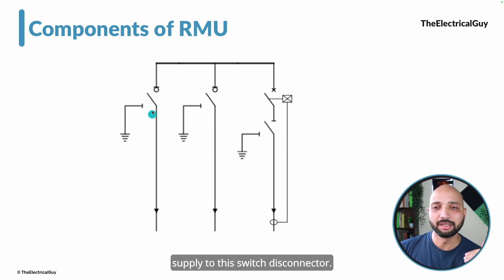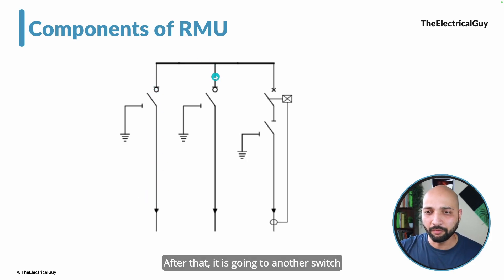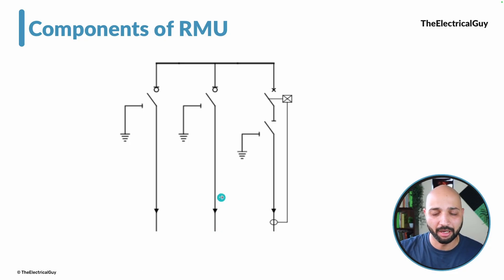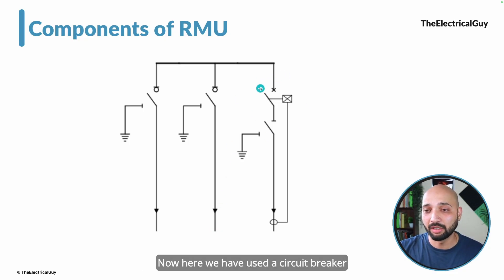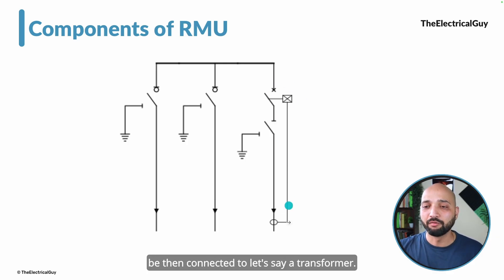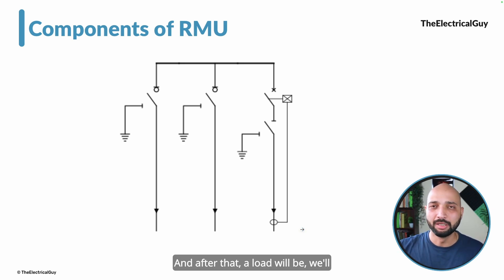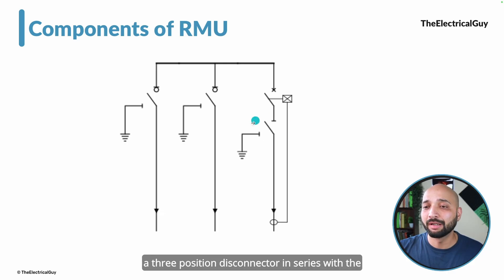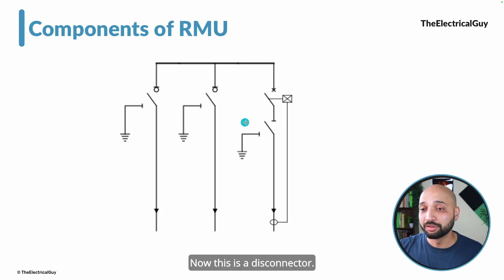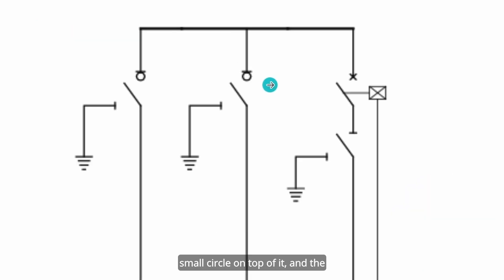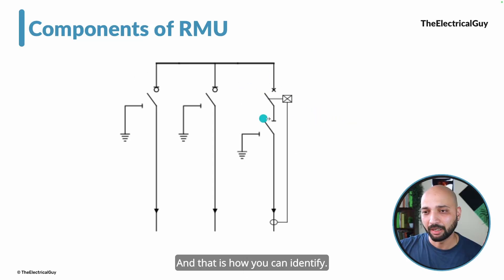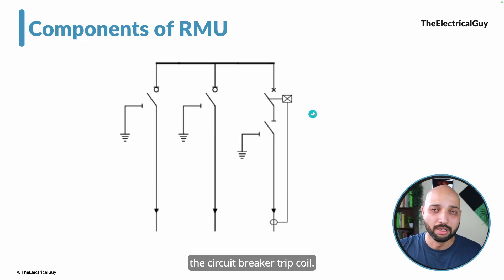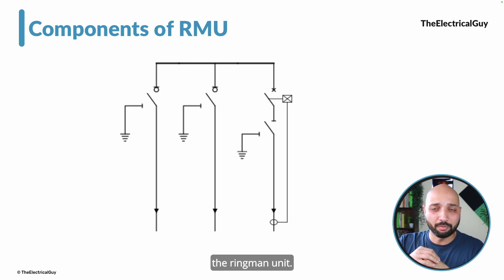We have connected the incoming supply to the switch disconnector — let's say this is the ring main feeder. After that it goes to another switch disconnector, and from here the supply goes to another substation. Thirdly, this is a transformer feeder. Here we have used a circuit breaker and not a switch disconnector, which is then connected to a transformer feeding a load. We have also provided a three-position disconnector in series with the circuit breaker. A switch disconnector will have a small circle on top of it; a disconnector will not. To trip the breaker in case of fault, a current transformer is connected here, with its input given directly to the circuit breaker trip coil. That is the single line diagram of the ring main unit.